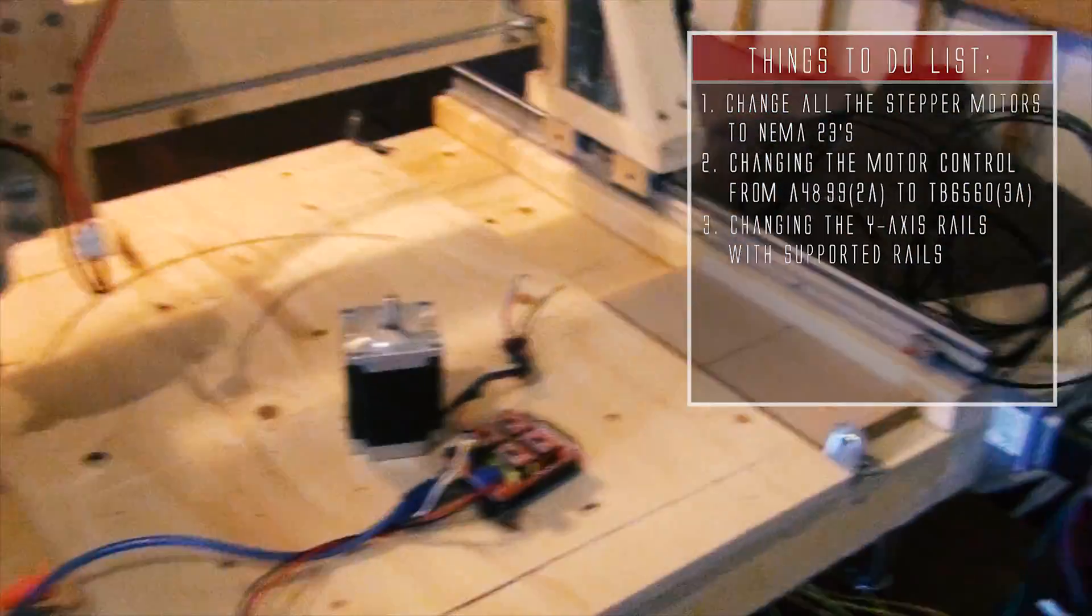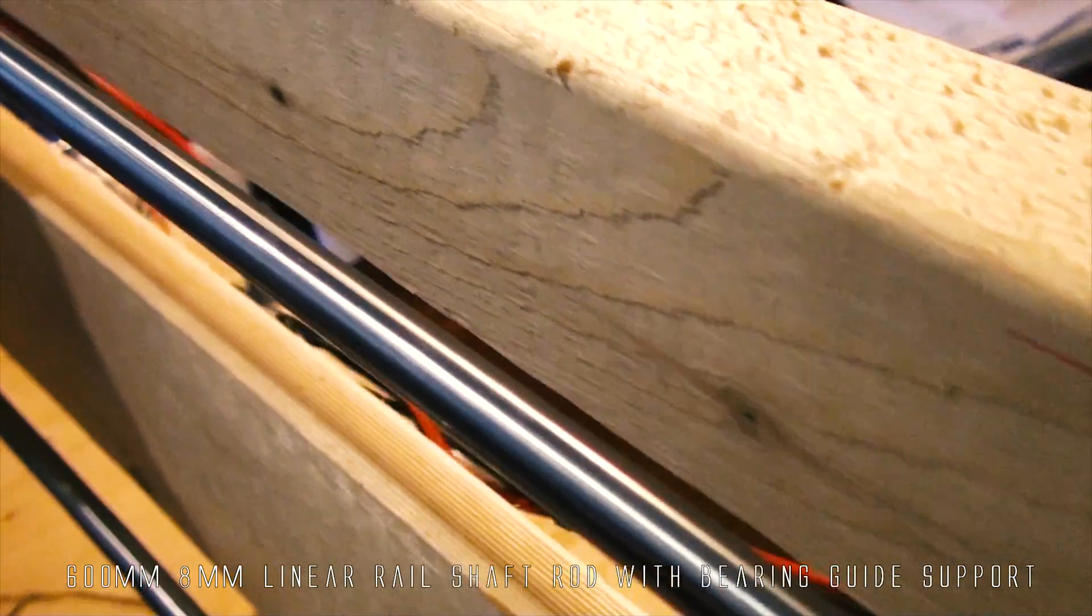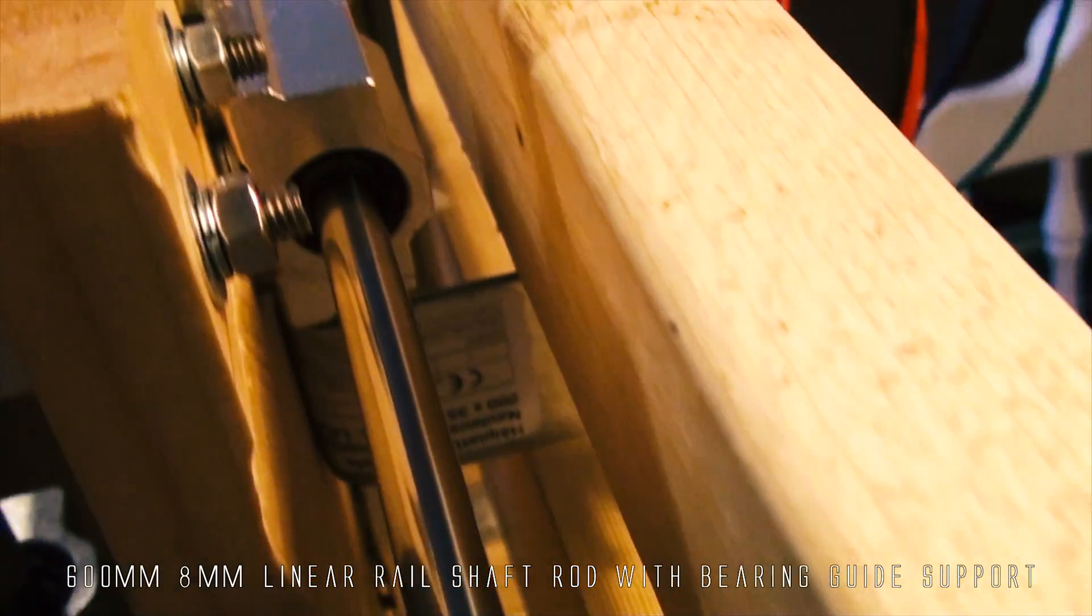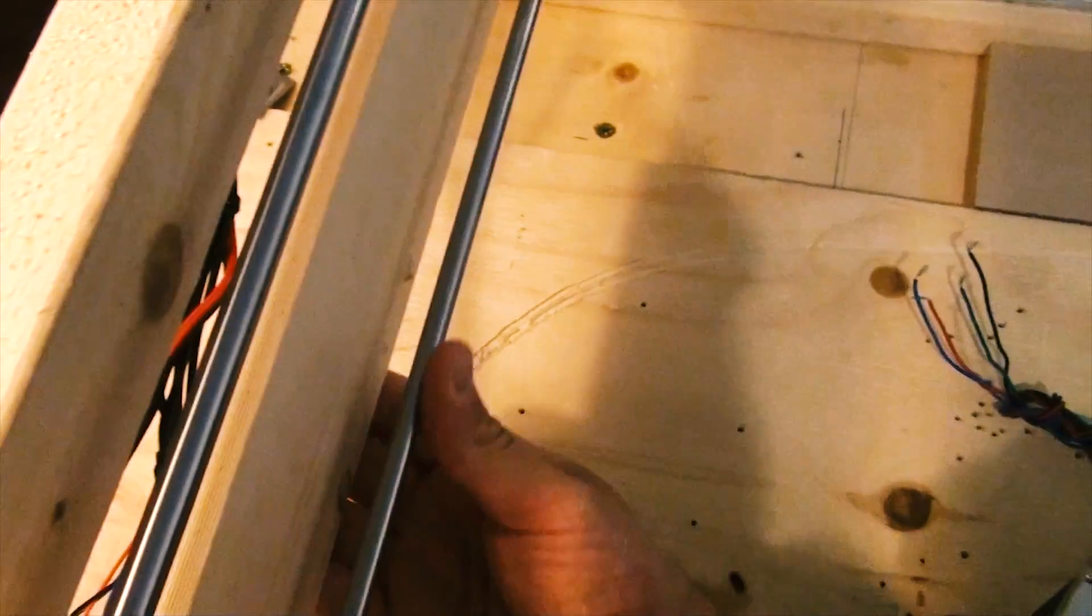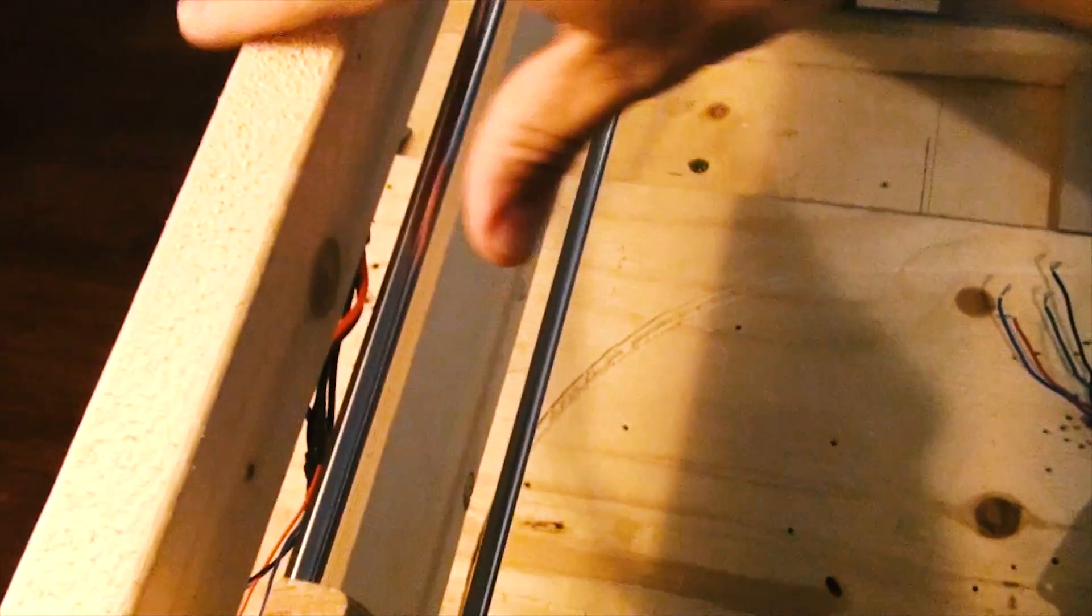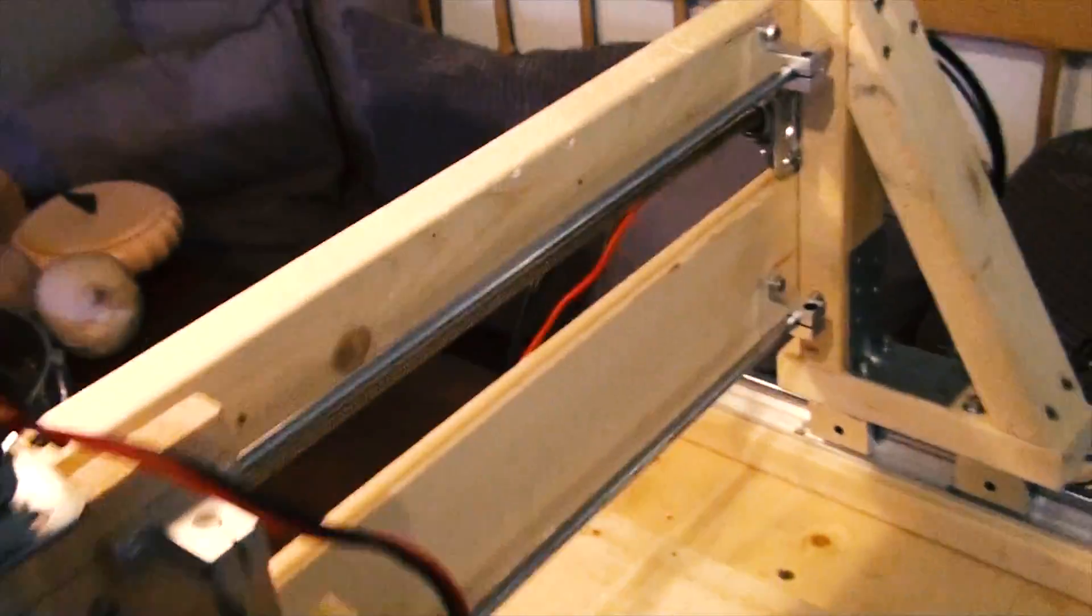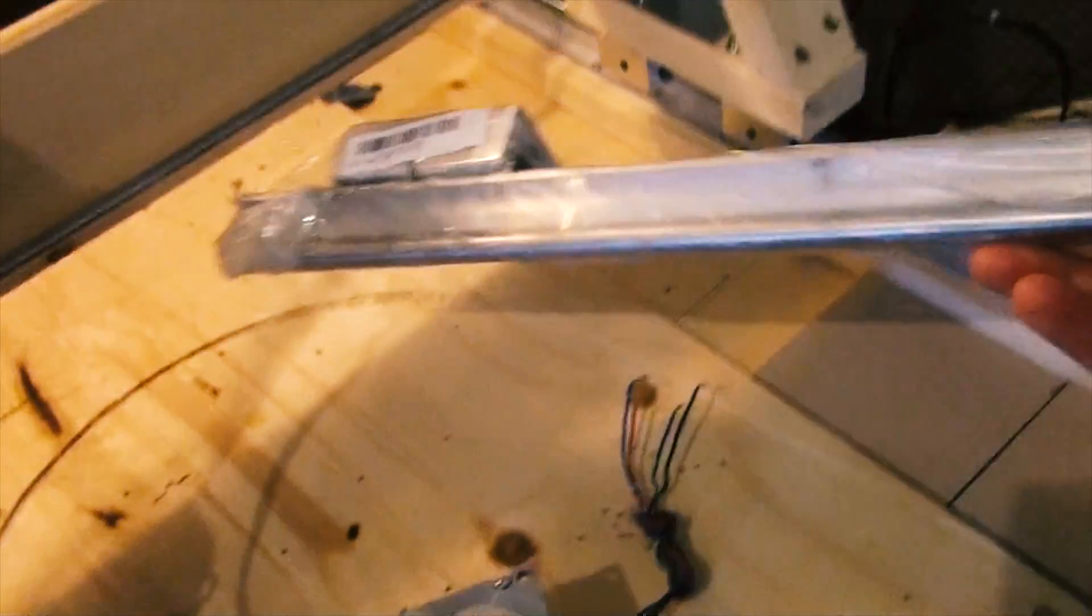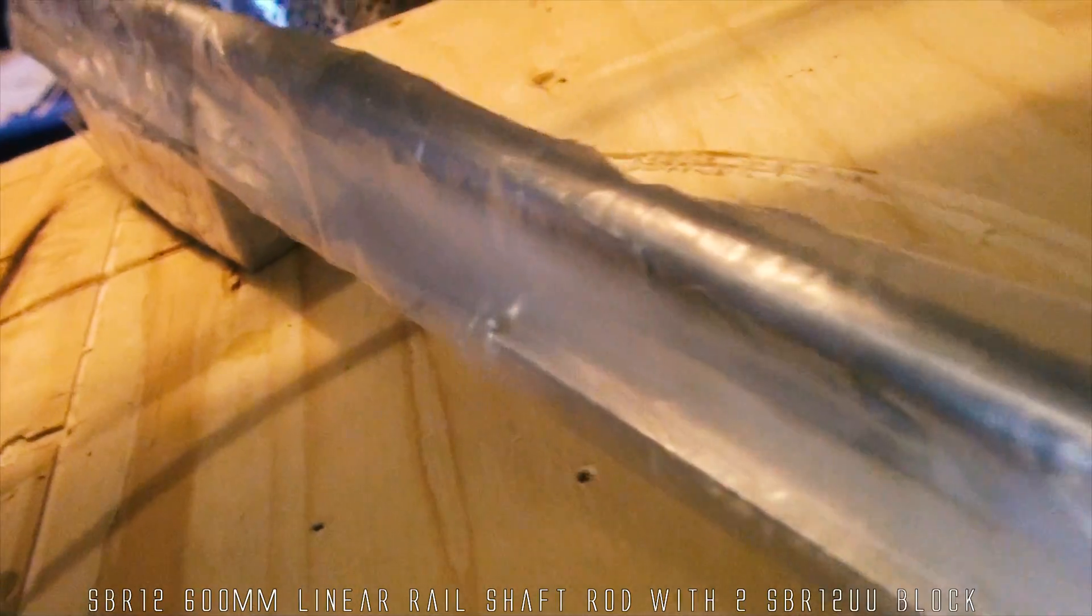The third problem I have to address is the y-axis. I have only used these rails - they are non-supported rails. The problem with these rails is that they are bending with no force at all. This makes the machine very uncalibrated, so I have to change those rails with some 600 millimeter supported rails. I bought this on Banggood - I will leave a link in the description.